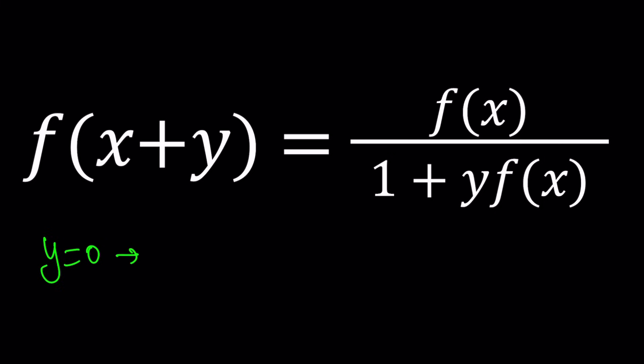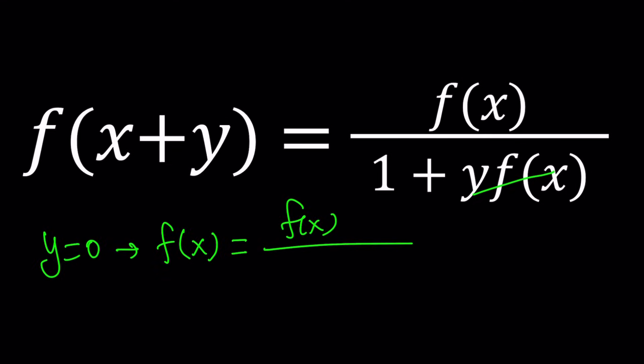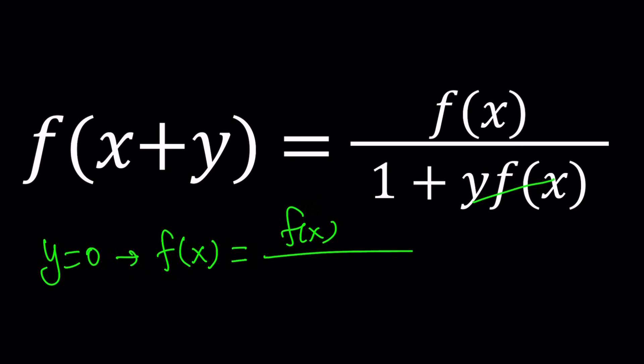If you replace y with 0, you would be getting f of x plus 0, which is f of x, equals f of x. By the way, when you replace y with 0, you're not replacing x with anything. And here, because y is replaced with 0, the whole thing disappears, and now we end up with 1 plus 0, which is 1. Great, right? We've got a tautology, something which is always true. f of x equals f of x. This didn't really help, but that's okay. You just got to keep track.